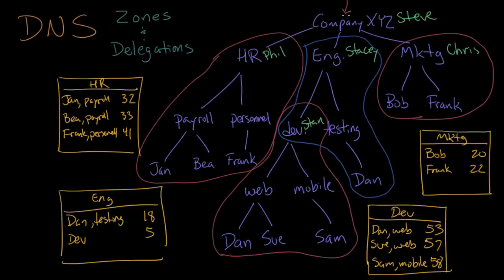Let's say another call comes in and this person is looking for Sam in mobile. The caller knows Sam works in development, which is within engineering. Steve receives the call and says Sam is in mobile development engineering, so he hands off the call to Stacy. Stacy looks in her book and says she doesn't know Sam's number, but knows development is at extension 5, so she hands the call off to extension 5, which goes to Stan. Stan looks in his list and finds Sam in mobile at extension 58.